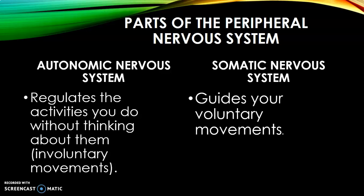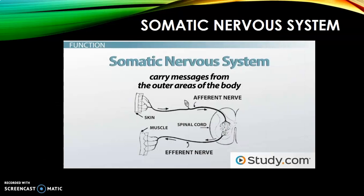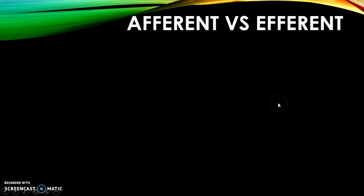Somatic is outside the body while autonomic is within the body. The somatic nervous system has afferent and efferent components. Afferent is sensory — when you receive the stimulus. Efferent is when you produce the response. For example, when I touch a hot object, feeling it is afferent; the brain processes that and creates a response by withdrawing my hand — that withdrawal is the efferent part.